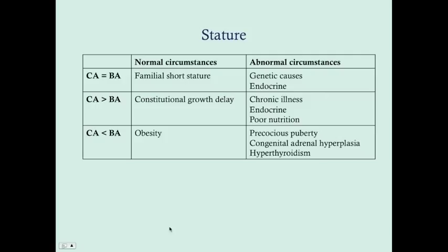When talking about stature, it's very important to know the bone age. We estimate bone age with an AP radiograph of the left hand and wrist. If the bone age equals the chronologic age, in most cases that's going to be familial short stature — a child born to a short family. Short parents have short kids; that's how it goes.